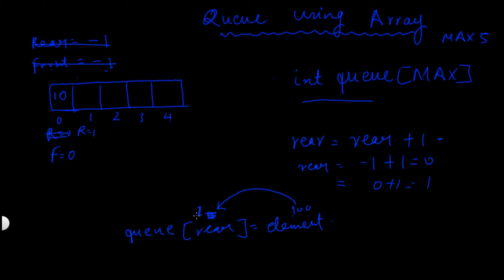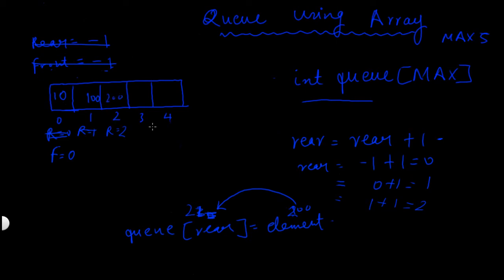The value of rear at this point is 1. Inserting another element: the value of rear is incremented by 1 again. The value of rear is 1, so 1 plus 1 equals 2. Rear becomes equal to 2, and suppose the value of element is 200, so 200 gets inserted at position 2.